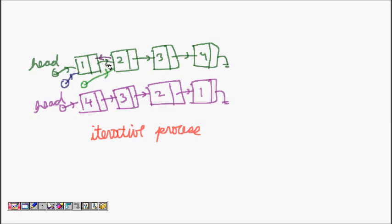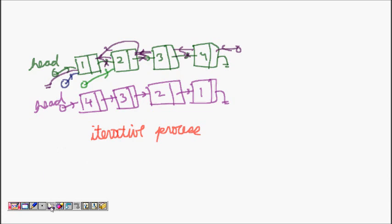Similarly, I should make a pointer here and a pointer like this, and move head accordingly. I have to remove the old forward pointers. The next of the first node should now become null, and the links should be redirected. That's the tactic we need to follow.